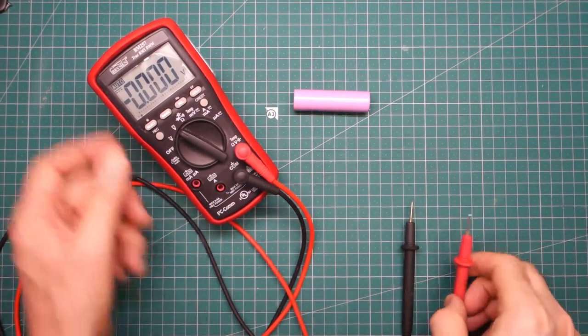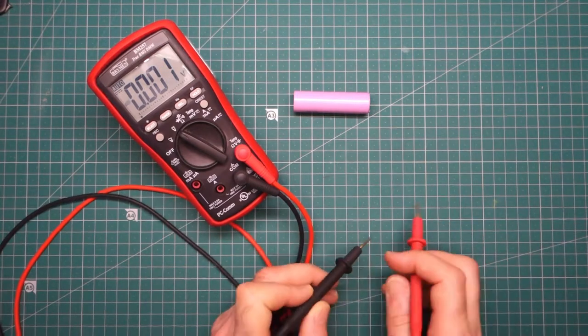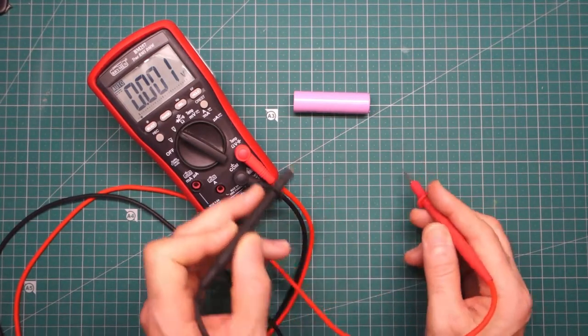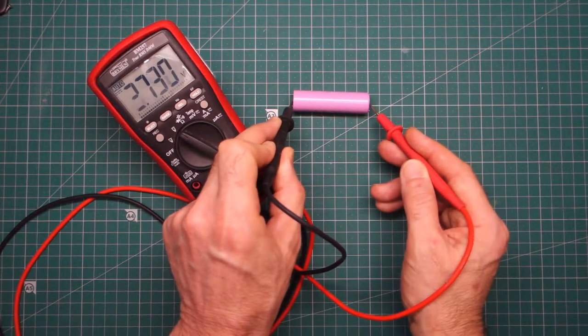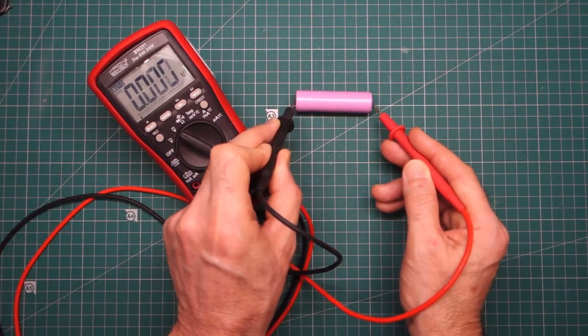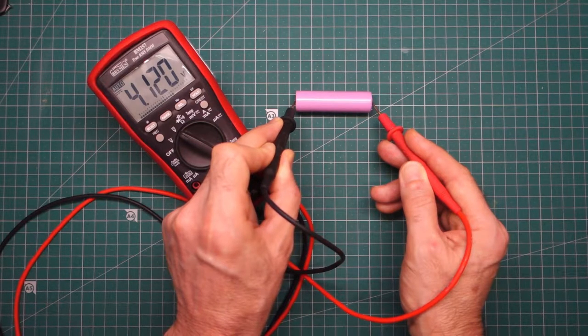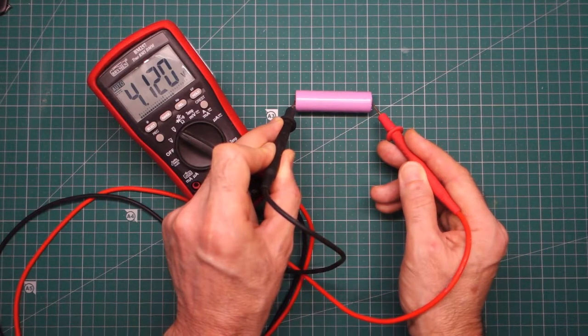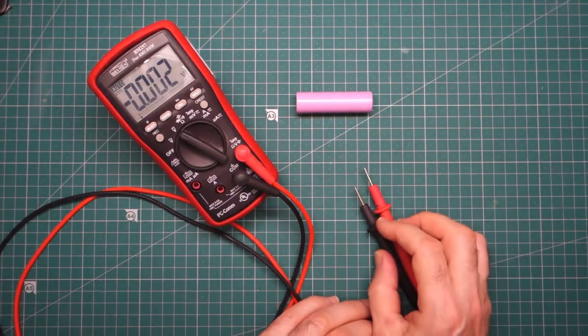So as I said, the digital multimeter or digital voltmeter, depending on your preference, is a great device for measuring voltages. And if we take this lithium-ion cell here, we can very quickly see, if I can get the probes on the terminals, we've got a voltage of 4.120 volts. Now, how do we know that that 4.120 volts is actually accurate or not?